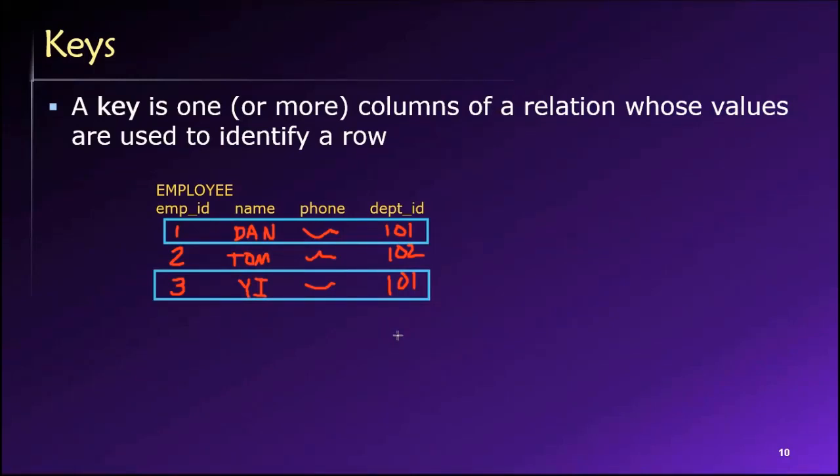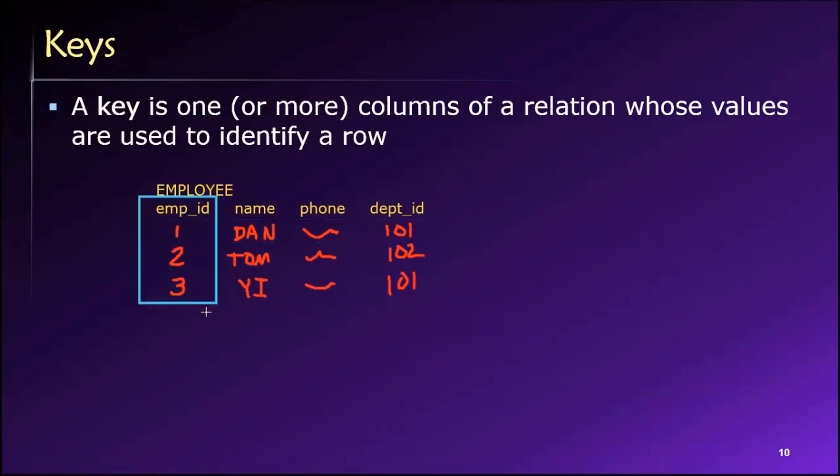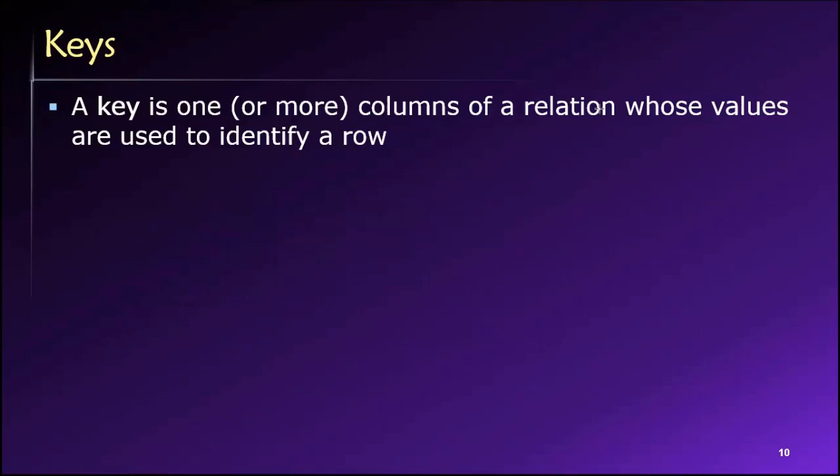So I'm using department ID to identify this set of two rows, but in the context of employee ID, that is being used to identify just one row within the table, because every value of employee ID will be unique. Every employee has their own employee ID. So we have two different types of keys here.